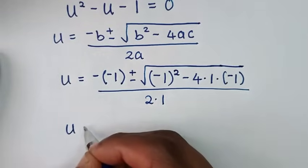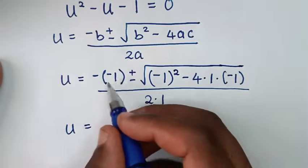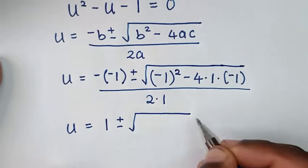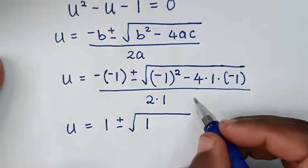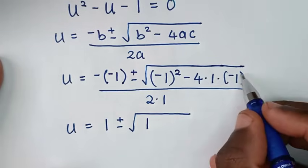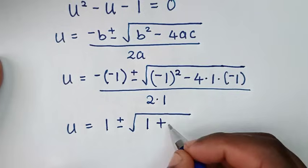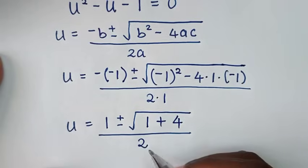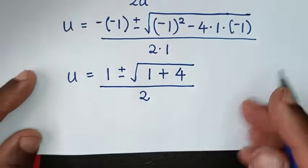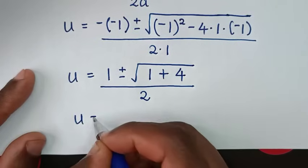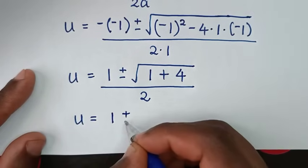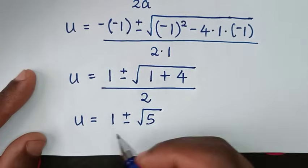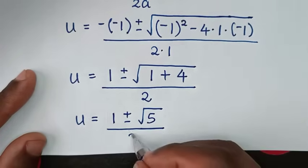Substituting: u equals negative of negative 1, which is positive 1, plus or minus square root of negative 1 squared — which is positive 1 — minus 4 times 1 times negative 1, which is positive 4, over 2 times 1 which is 2. This simplifies to u equals 1 plus or minus square root of 5, over 2.